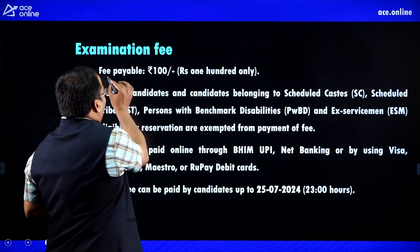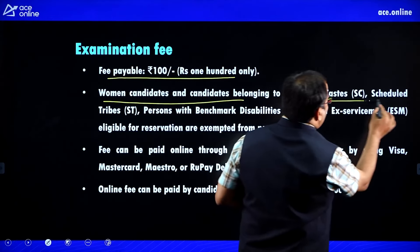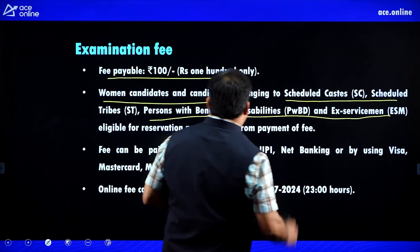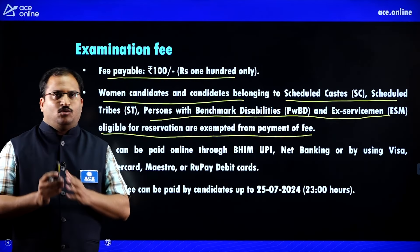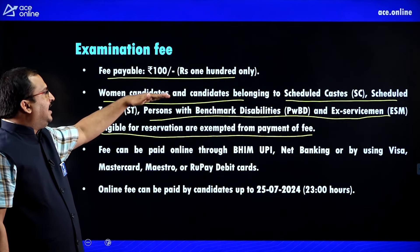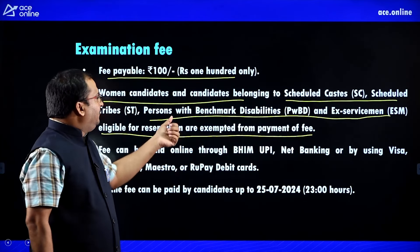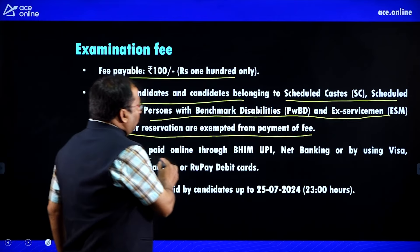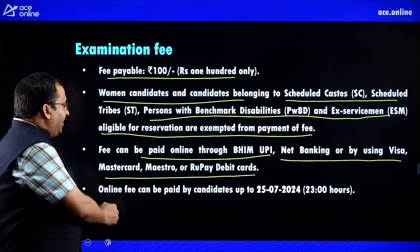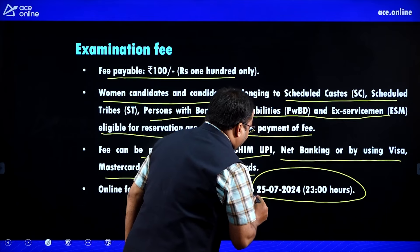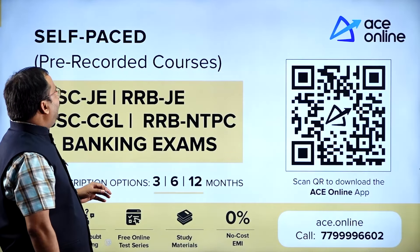The examination fee is ₹100 only. Women candidates and candidates belonging to SC, ST, persons with benchmark disabilities, and ex-servicemen eligible for reservation are exempted from payment of fee. Fee can be paid online through UPI, net banking, or by using Visa, MasterCard, Maestro, or RuPay debit cards. Online fee payment can be made up to 25th July 2024, 11 PM only.